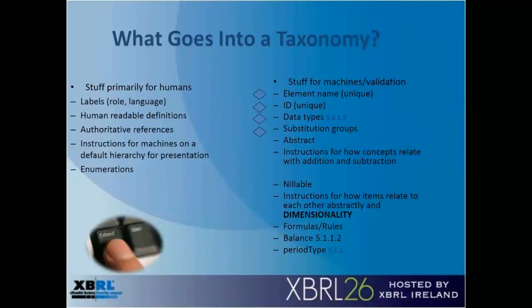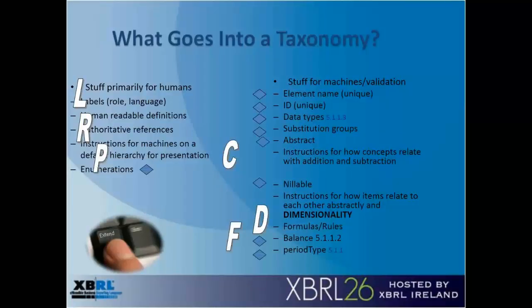So taxonomies have things for people, like labels, human-readable definitions, and pointers to references and presentations. And then things for machines: the unique element names and IDs, types of data so you can make sure the right type of data has been entered, instructions for how things relate with additions and subtractions, how they relate dimensionally, and formulas and other things very specific to business reporting. So the label, reference, presentation, calculation, definition, and formula link bases all work as part of our taxonomies.